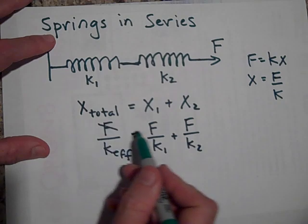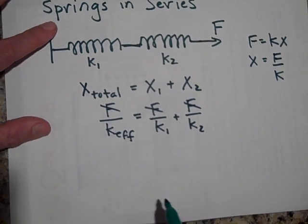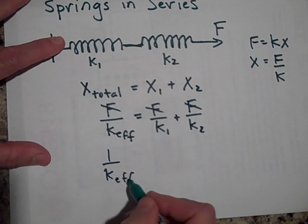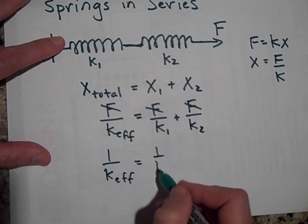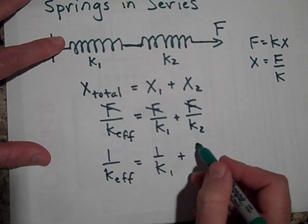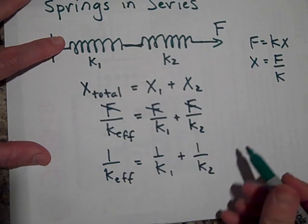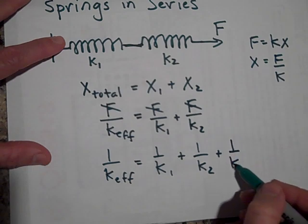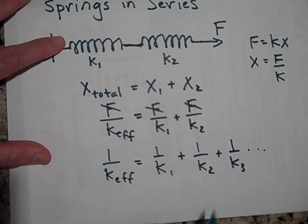Okay, well the F's can cancel out and so we're left with 1 over K effective is equal to 1 over K1 plus 1 over K2. If there were more you'd just have plus 1 over K3 and so on.